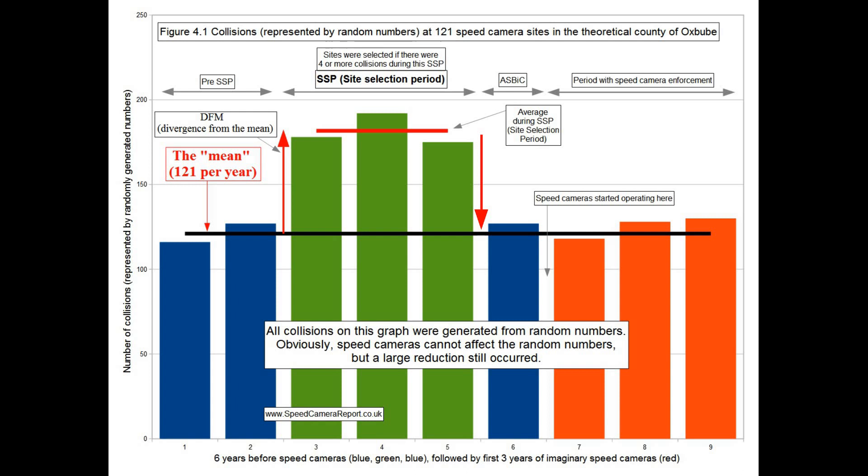And then they suddenly drop back down to around their mean rate at the end of our SSP. That reduction at the end is what's called regression to the mean. The most important observation is that if speed cameras are not deployed, then collisions ought to continue at around their mean rate, and not the rate that occurred during the SSP.